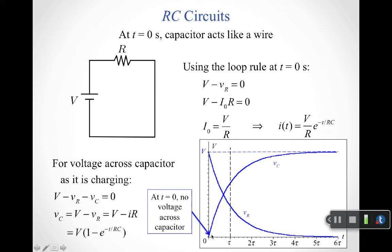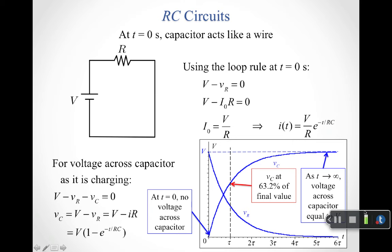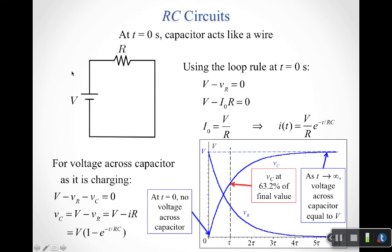At t equals zero, there's no voltage across the capacitor since there's no charge on the plates yet. After one time constant, V_C is 63.2% of its final value. As t approaches infinity, the voltage across the capacitor equals the battery voltage. The capacitor now acts like a second battery driving current in the opposite direction, so no current remains. All the current has been dissipated and the capacitor is fully charged to the battery voltage.